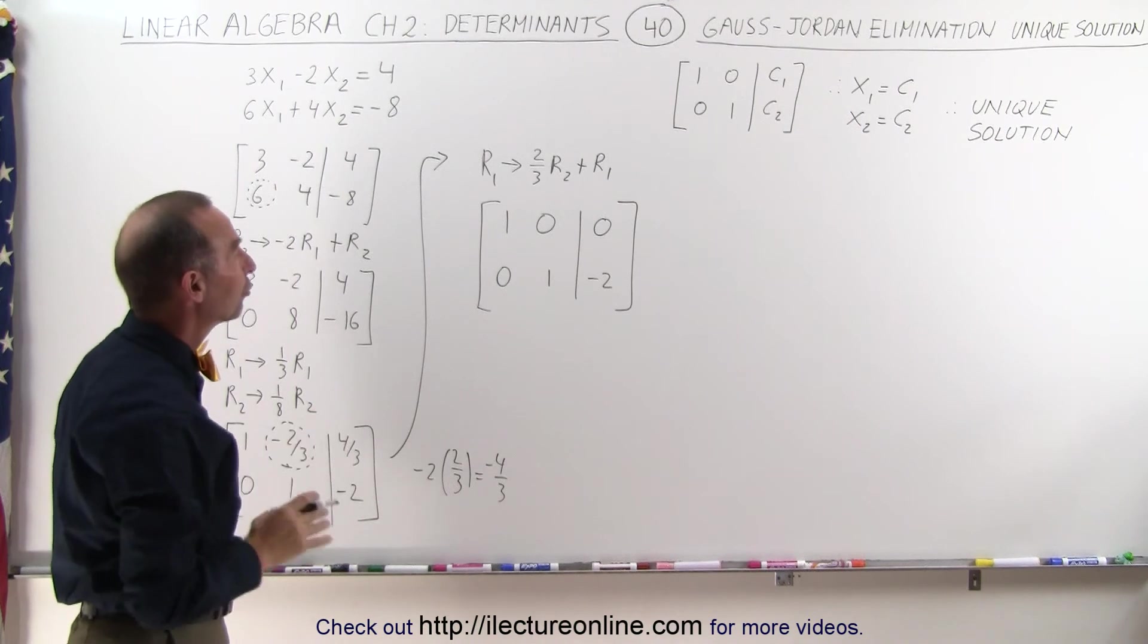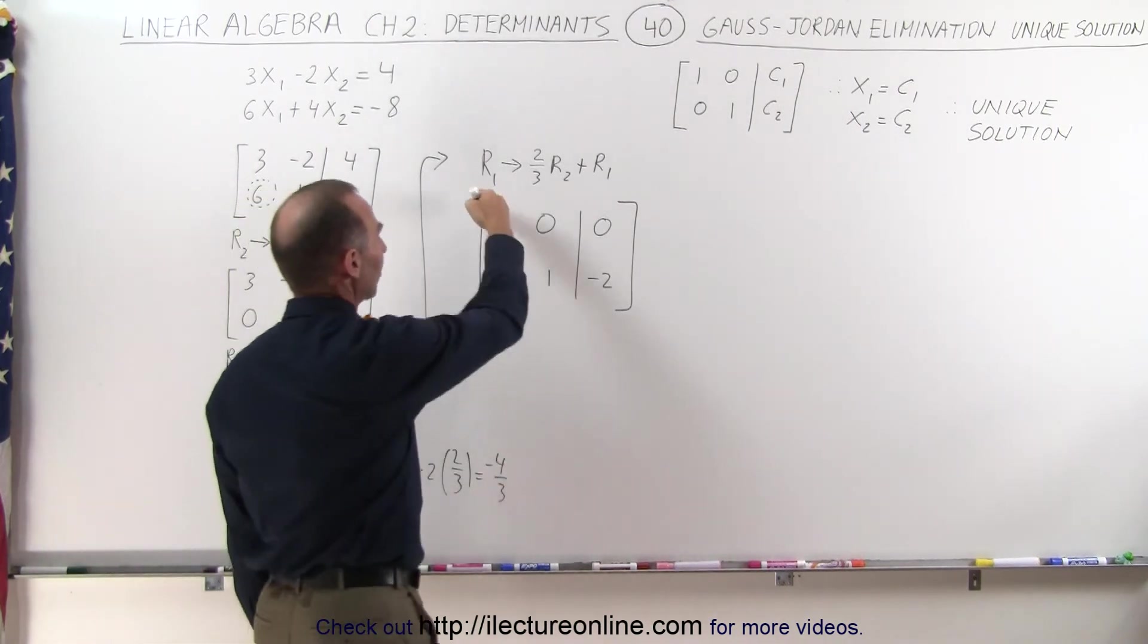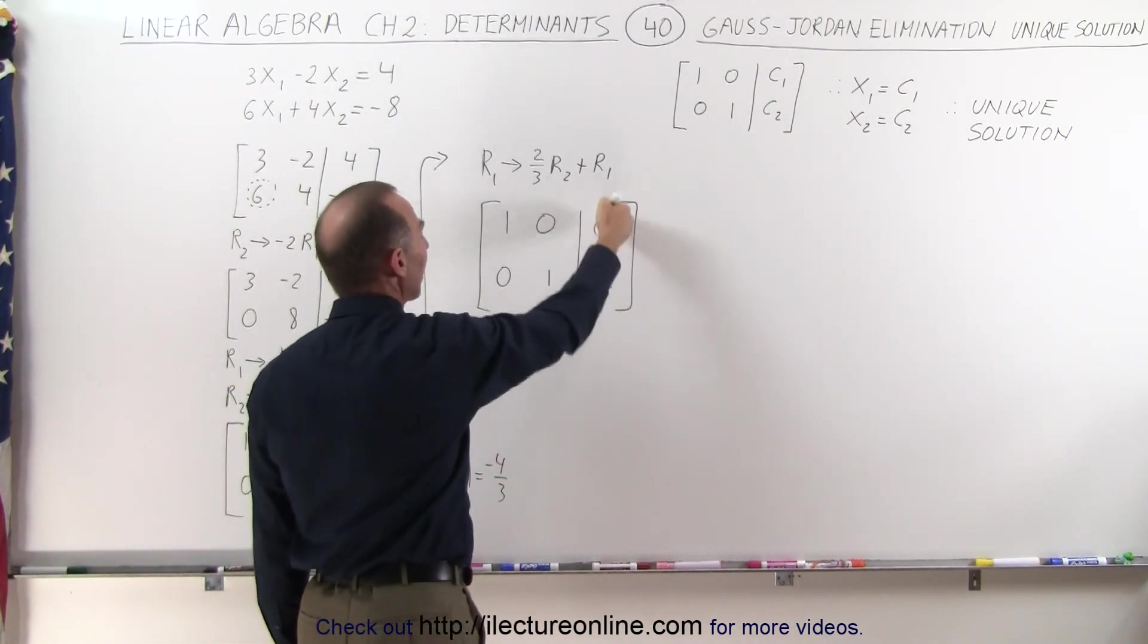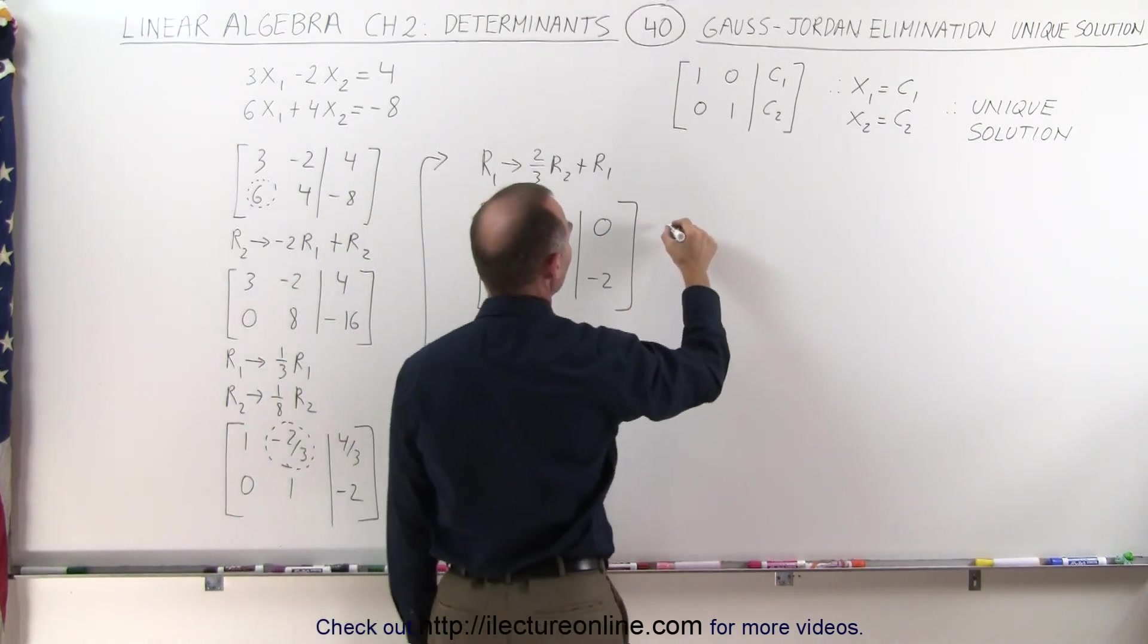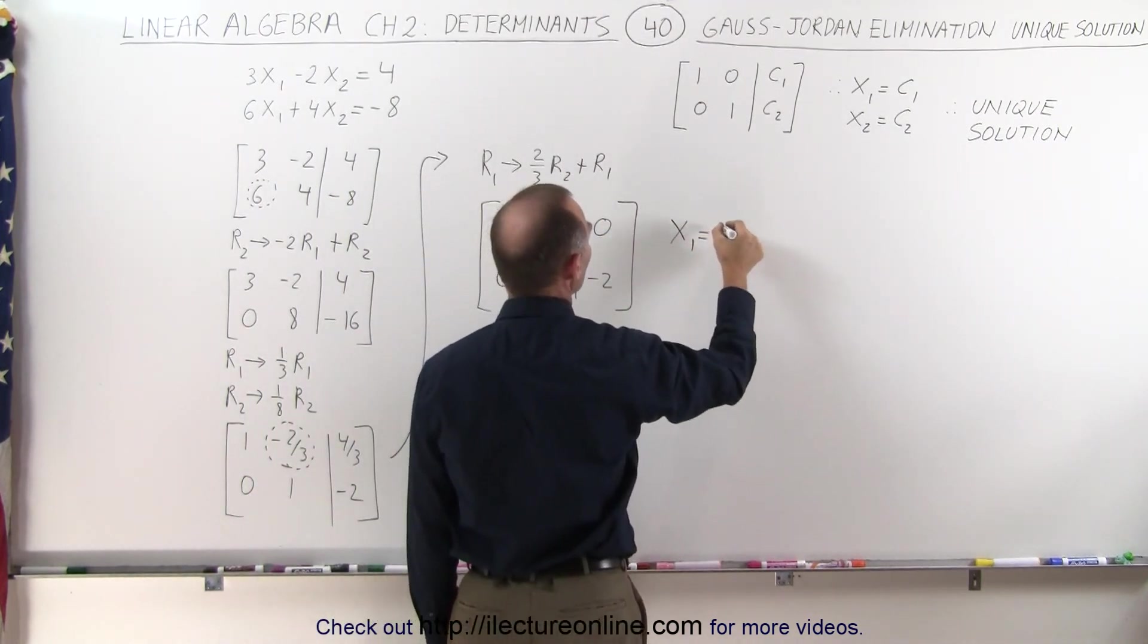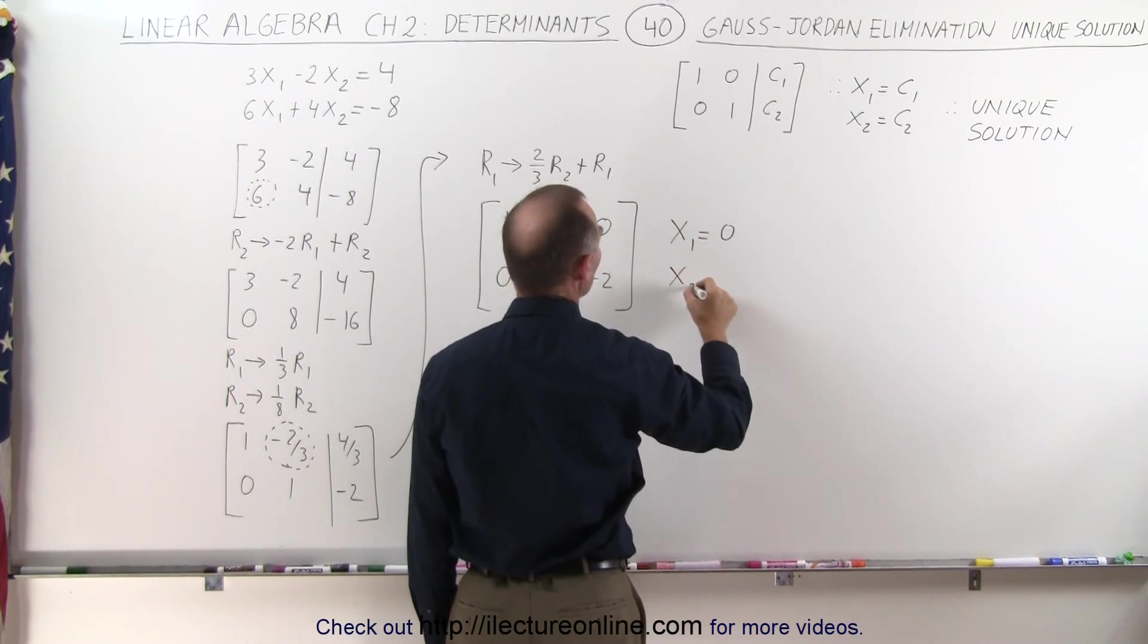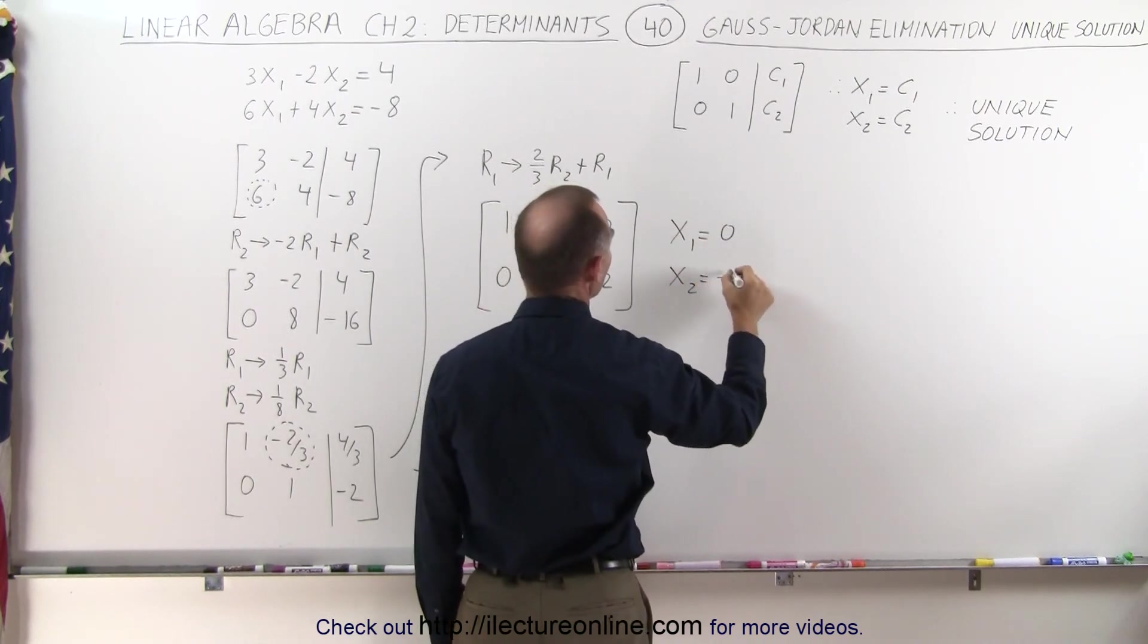Notice we have a unique solution. We have 1s across diagonals, 0s everywhere else, and we have two constants here, which means that in this case, our variable x1 is equal to 0, and x2 is equal to negative 2.